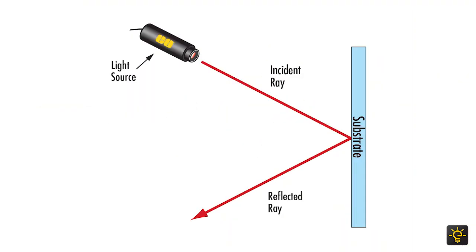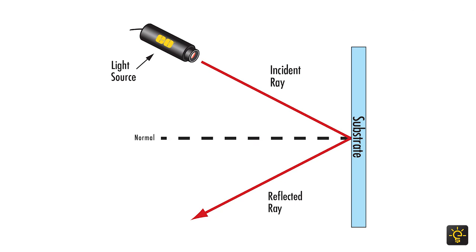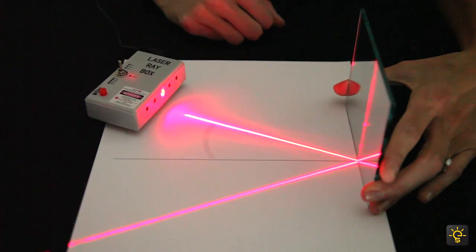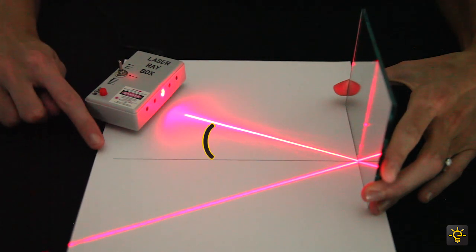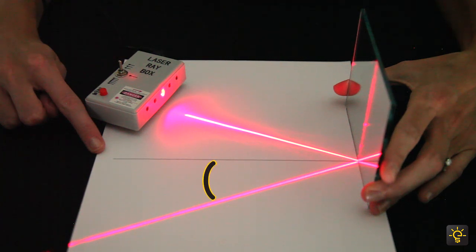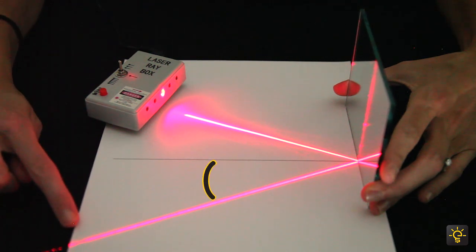In physics, scientists and engineers use an imaginary line called a normal. A normal is an invisible line that is perpendicular to the surface, in this case a mirror. The angle of incidence is the angle between the incident ray and the normal. Likewise, the angle of reflection is the angle between the reflected ray and the normal.